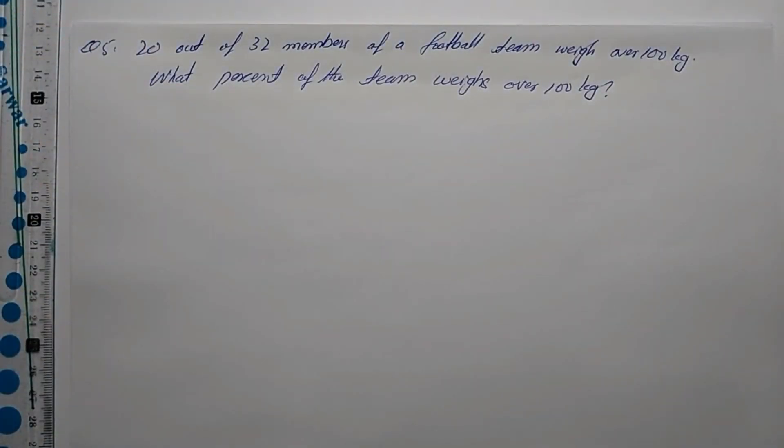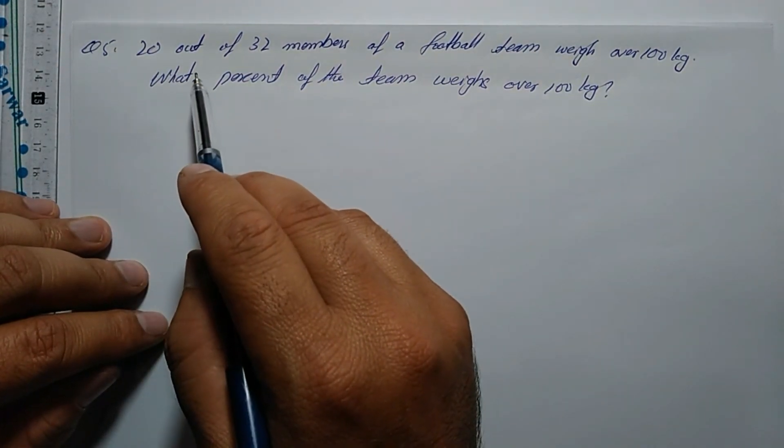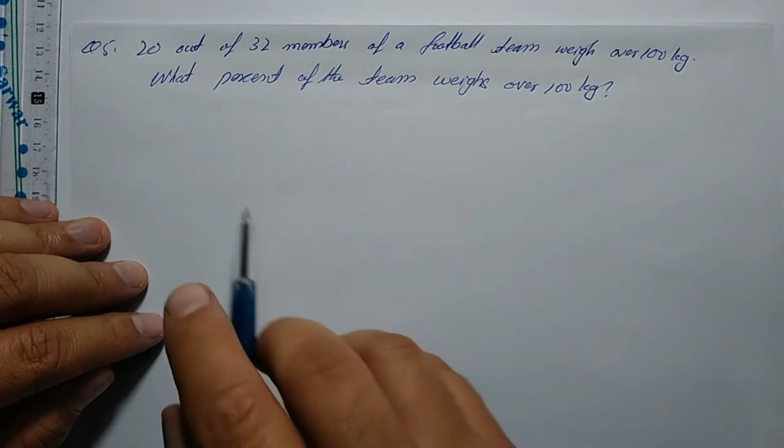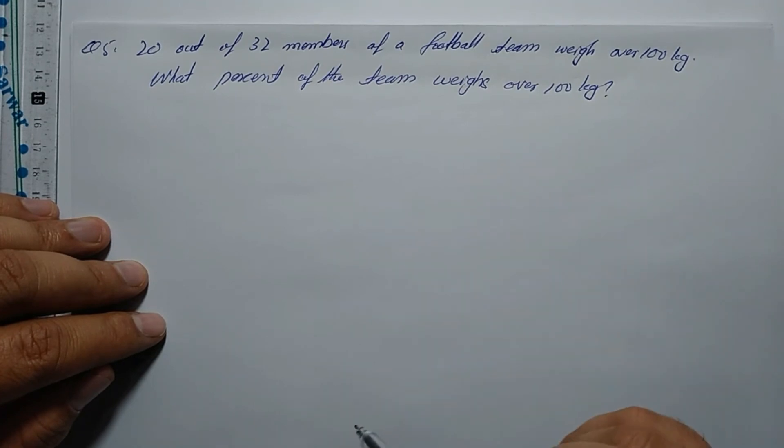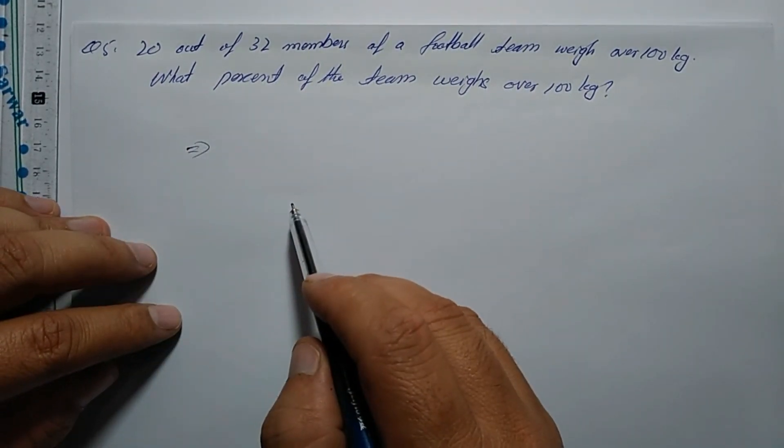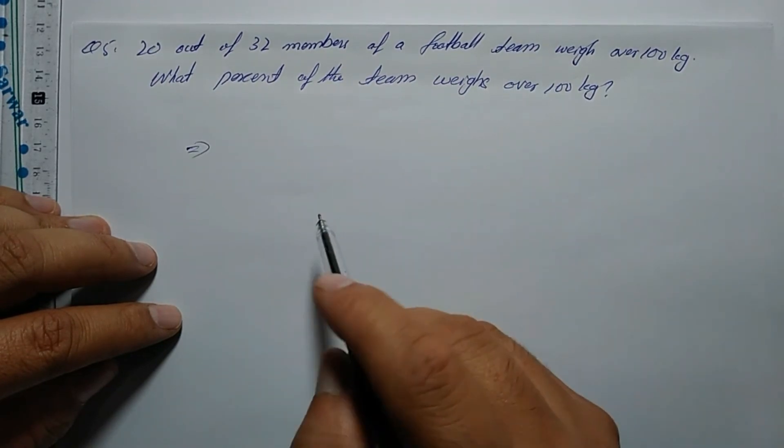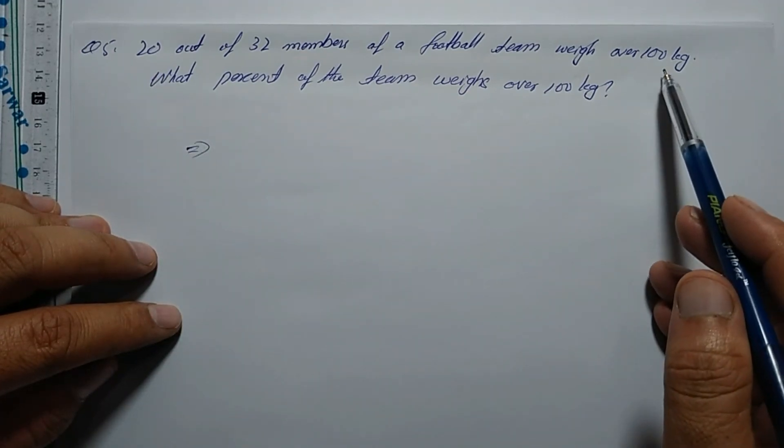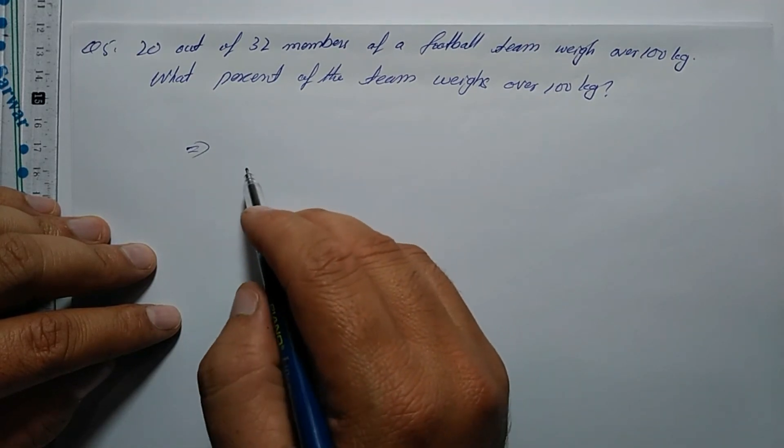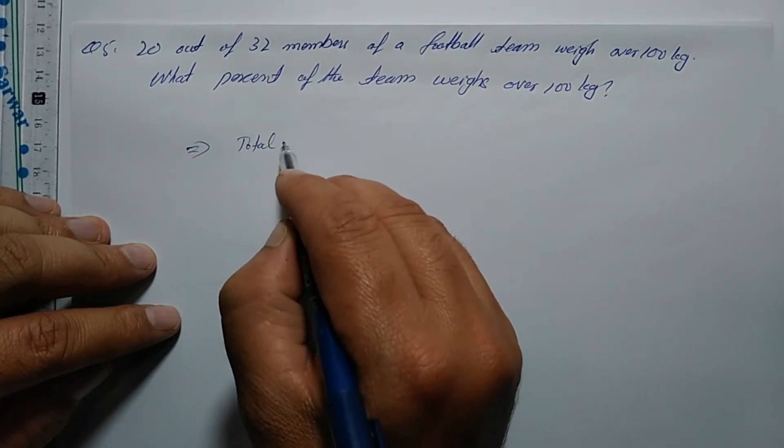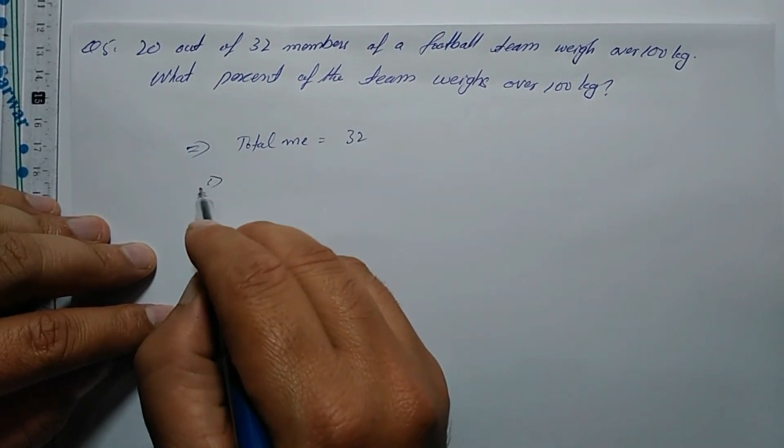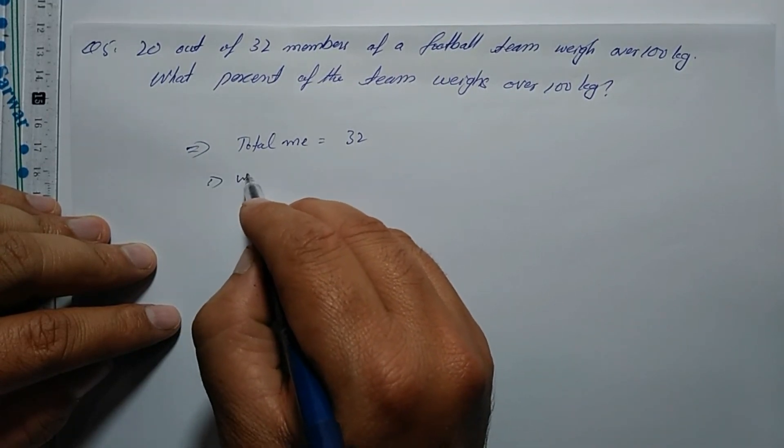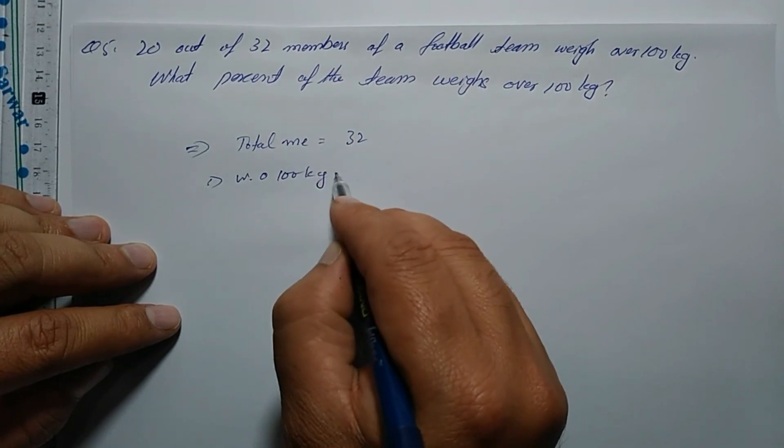Question number 5: There are 32 members of a football team. What percent of the team weighs over 100 kg? Total members are 32, and 20 members weigh over 100 kg.